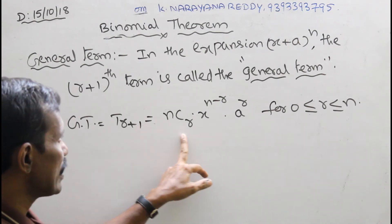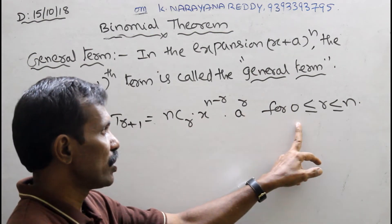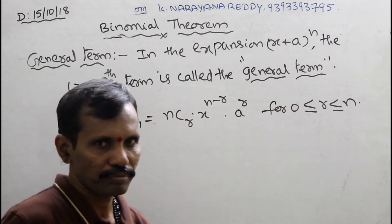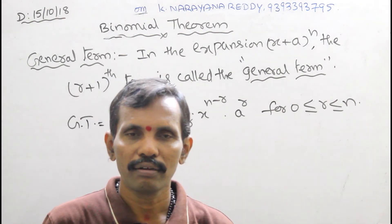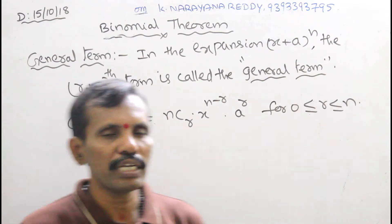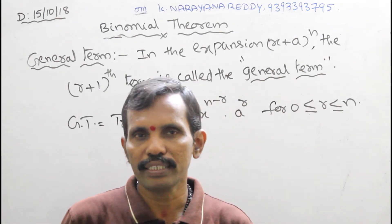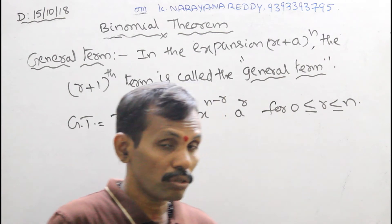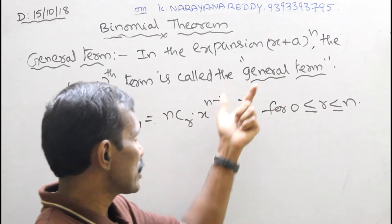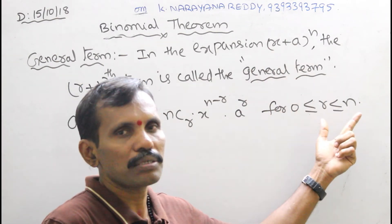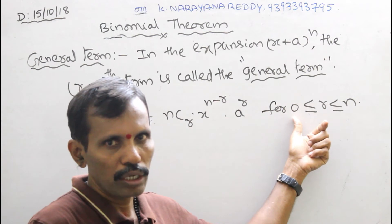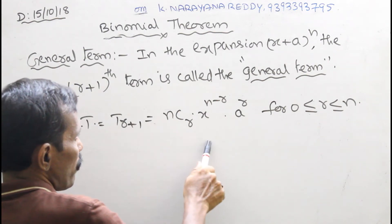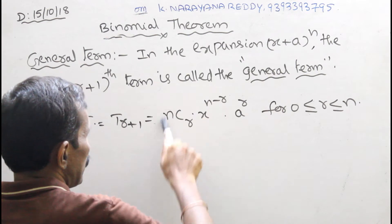The general term is: T sub r plus 1 equals nCr times x to the power of n minus r times a to the power of r, for 0 less than or equal to r less than or equal to n. That means r ranges between 0 and n. For example, if x plus a whole squared is there, the range is 0 to 2 — it cannot exceed 2. Similarly, for power n the range is 0 to n, minimum is 0.